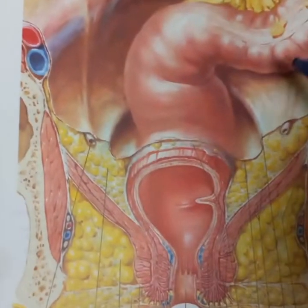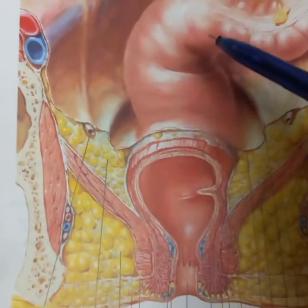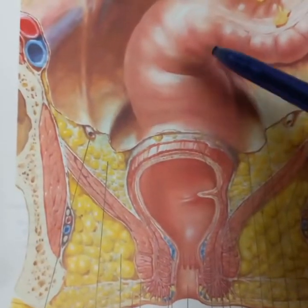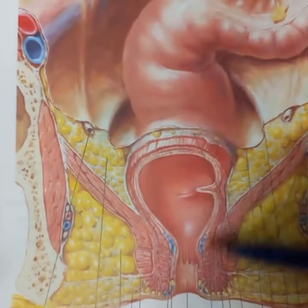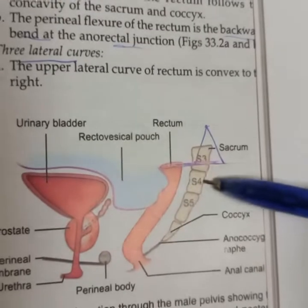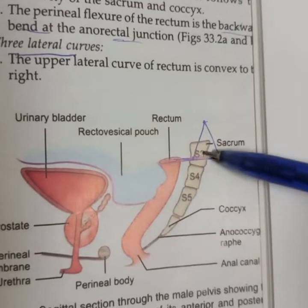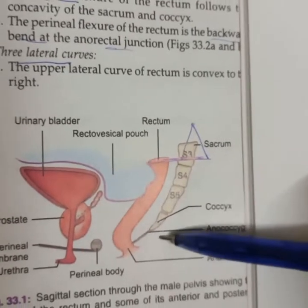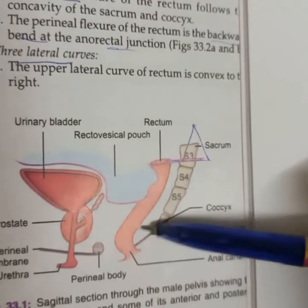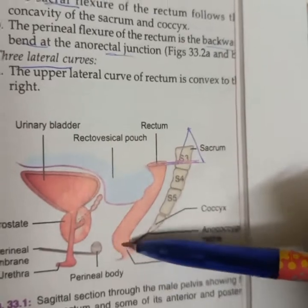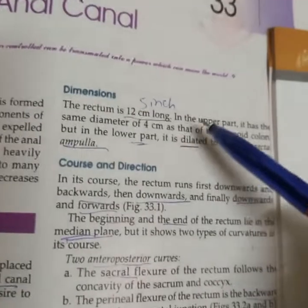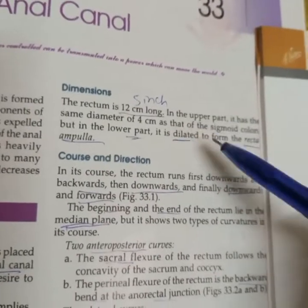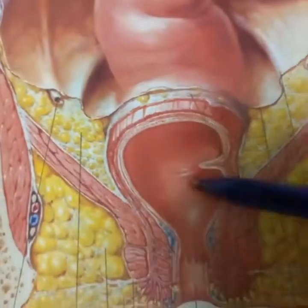Rectum begins as a continuation of sigmoid colon. It is situated at the level of the lower three sacral vertebrae and coccyx, and ends by joining the anus at the anorectal junction. It is 12.5 cm long (about 5 inches), and its dilated lower part is called the ampulla.